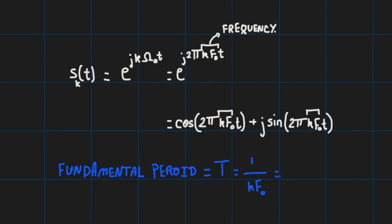Or we can write this more differently as T₀/k, where T₀ is 1/f₀. Now we emphasize here on k to denote the fundamental period T_k = T₀/k.